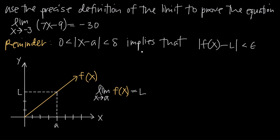The precise definition of the limit relates two inequalities. It tells us that if the absolute value of x minus a is greater than 0 but less than delta, that implies the absolute value of f(x) minus L is less than epsilon. Basically, all we have to do is find a relationship between epsilon and delta in the form of an inequality, and that proves the limit exists.